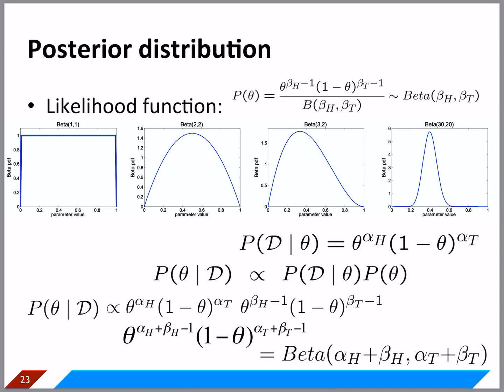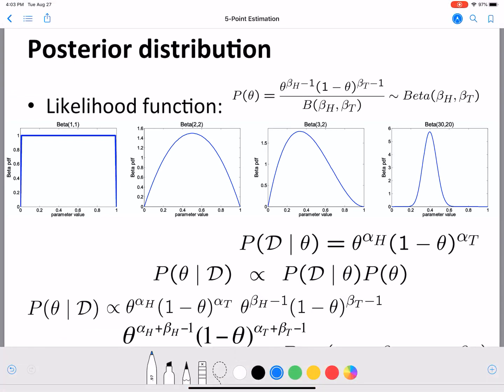Now for calculating the posterior distribution, let's start with P of D given theta, which we know comes from a binomial distribution. We multiply this by P of theta. We decided to use the beta distribution for P of theta because it is the conjugate prior to the binomial distribution.